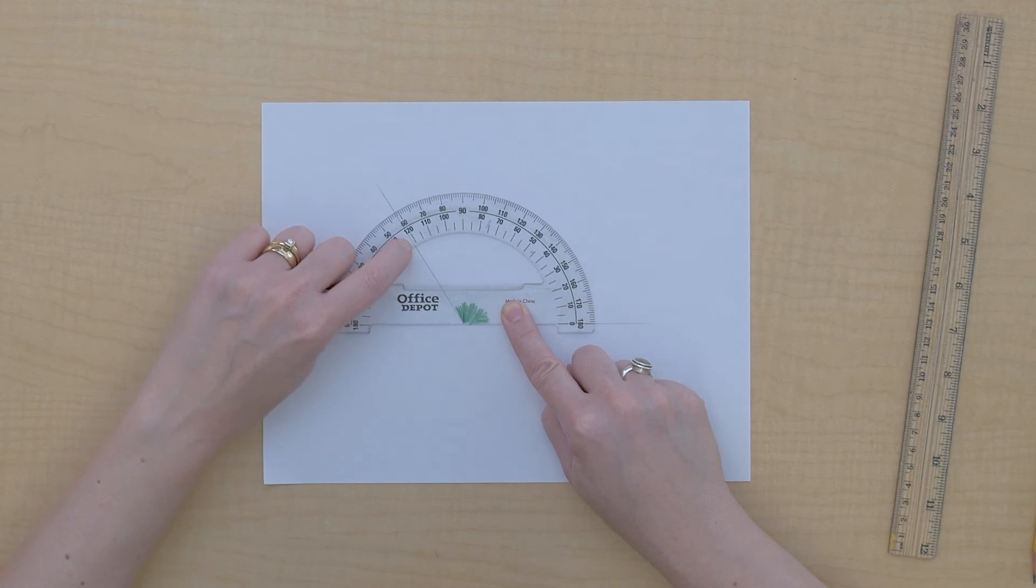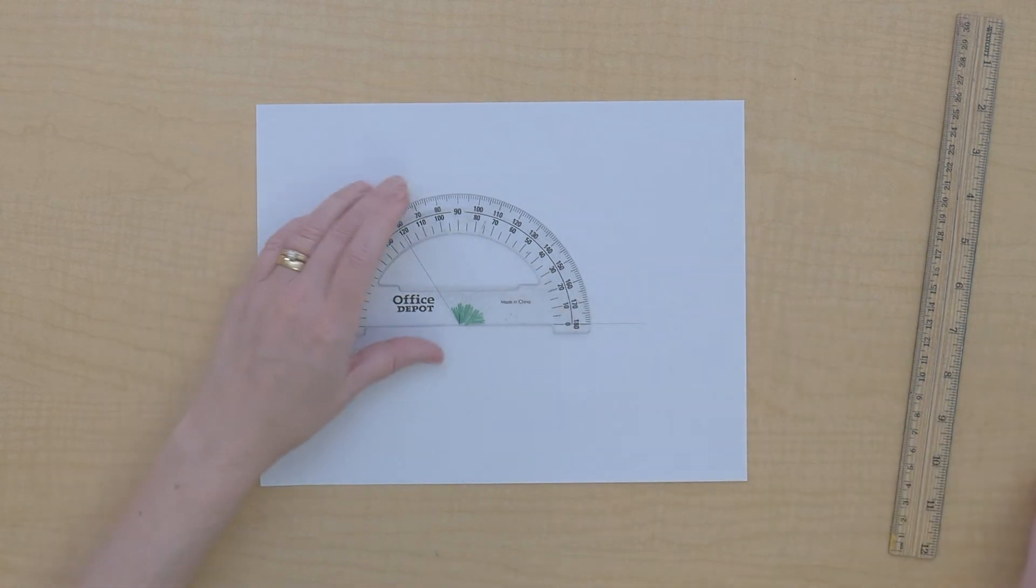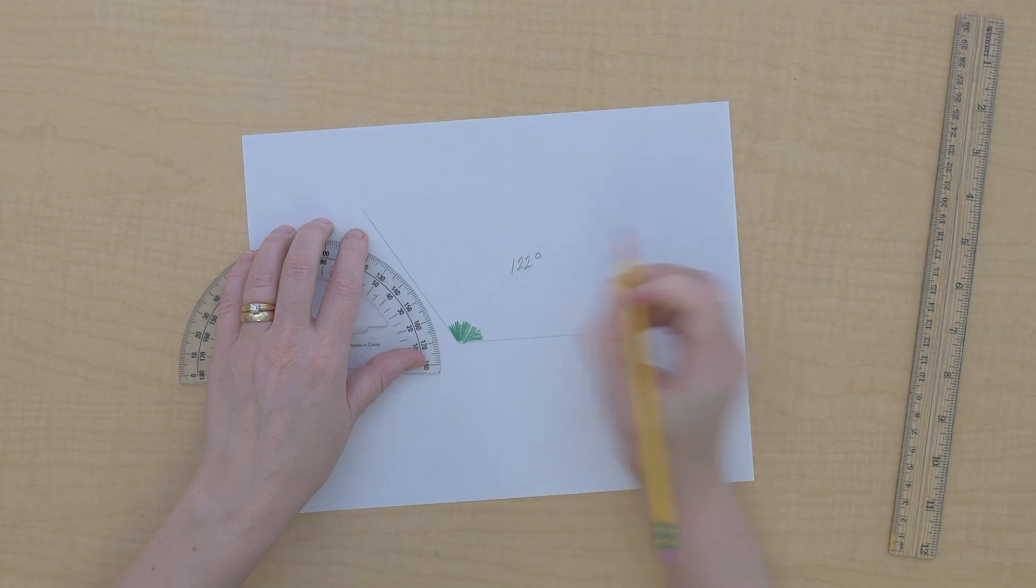And since it's larger than a right angle, I know to read this bottom number. And it's 120, but it looks like we're past, it looks like we're at about 122 degrees. So this angle is 122 degrees.